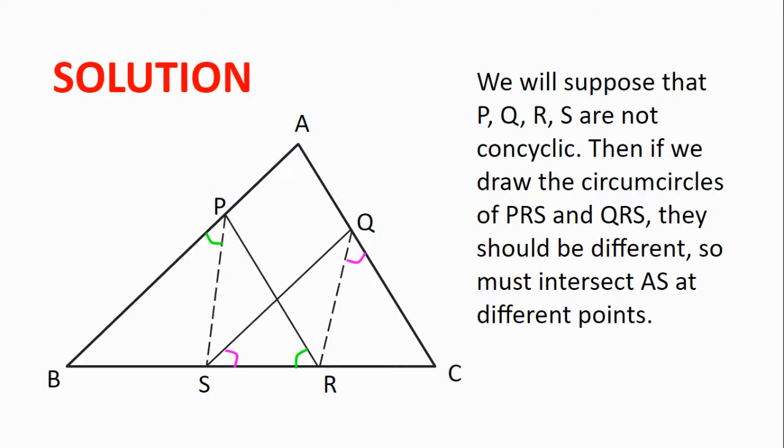We will suppose that P, Q, R and S are not concyclic. Then, if we draw the circumcircles of triangles PRS and QRS, they should be different. And because we know that they already intersect at R and S, they cannot intersect anywhere else. And so they must intersect the line AS at different points.